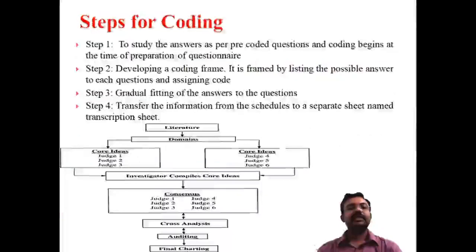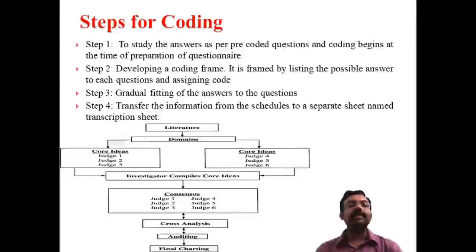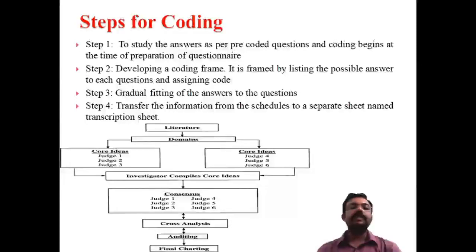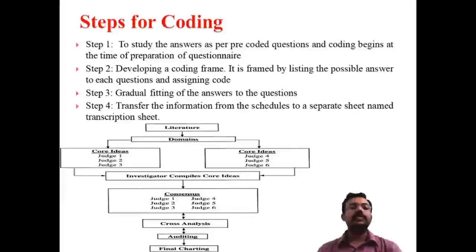What are the steps for coding from a researcher's point of view? The first important step is to study the answers of pre-coded questions — the researcher must be familiar with all the answers. Coding begins at the time of preparation of the questionnaire, when preparing for variables like age, education, occupation, and income, each question must be assigned a number.